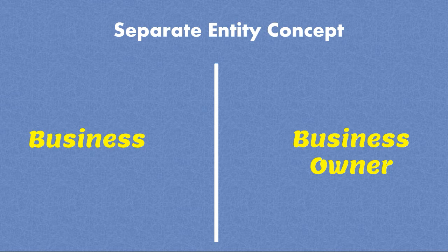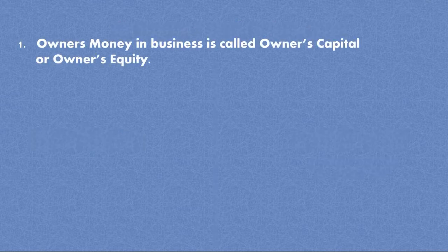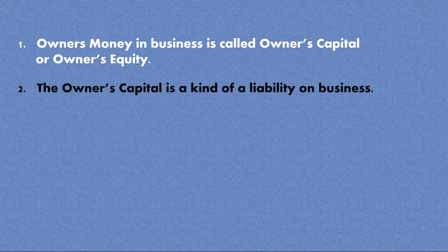Let me explain step by step. First, the owner's money in the business is called owner's capital or owner's equity — something we discussed in the last lecture. The owner's capital is a kind of liability on the business. Because the business is a separate entity receiving money from the owner, that money is treated as a liability.